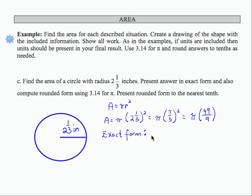So my exact form for the area is going to be, and I'm going to write it this way, 49 times pi over 9. My units are inches squared. So there's my formal exact form representation.